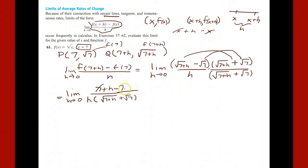But after simplifying the numerator, we can then cancel. What we're looking at is the limit as h goes to 0 of h over h, and then we have this √(7+h) + √7. Now we can cancel these h's.